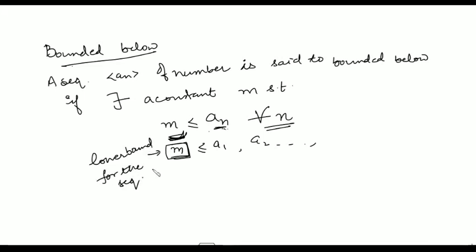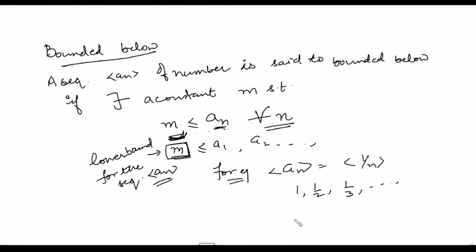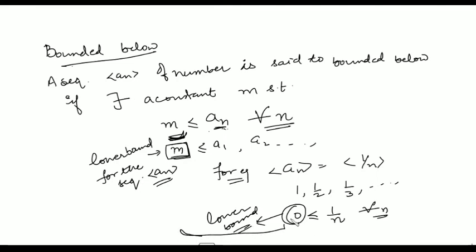And we say the sequence is bounded below by the number small m. For example, if we again consider the sequence a_n = 1/n, the terms 1, 1/2, 1/3, and so on are all greater than or equal to 0 for every n. So 0 becomes the lower bound for the sequence. Moreover, every number smaller than 0, such as -1, -2, -3, are also lower bounds for the sequence 1/n.